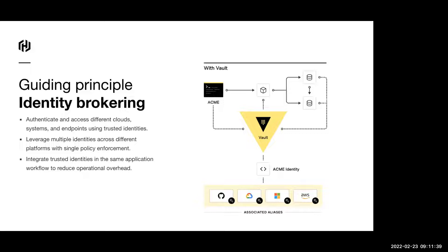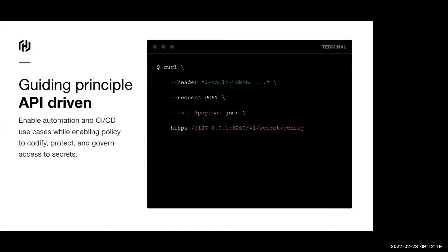One of the guiding principles, as I mentioned when we talked about the shift to the cloud, is identity brokering — we want to authenticate applications versus IP addresses. We have integrations for all sorts of cloud providers, all sorts of databases. If you want to inject secrets using Kubernetes, you can use service accounts. There are a lot of integrations, and if you have a use case, I'm pretty sure it's covered by Vault. And if we don't have an integration, you can always use the API — the CLI, web interface, as well as all the secrets integrations.